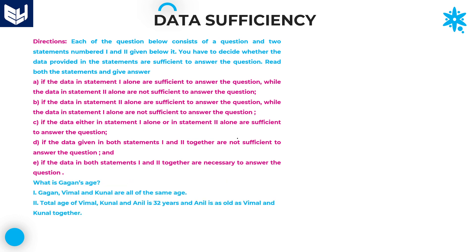Let's move on to the next question: what is Gagan's age? According to the first statement, Gagan, Vimal, and Kunal all have the same age — they are all equal in age. But we don't know what the actual age of each person is, so it is not possible to get the answer by using statement 1 alone.